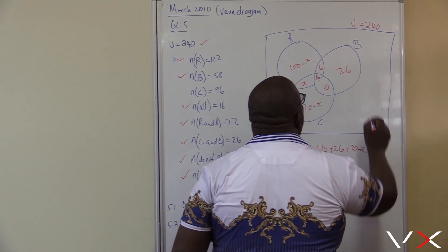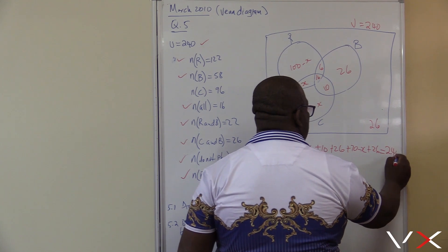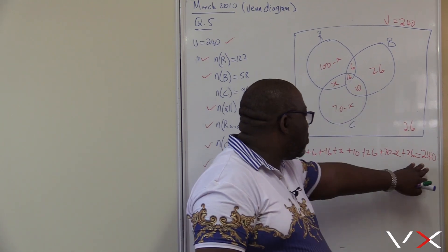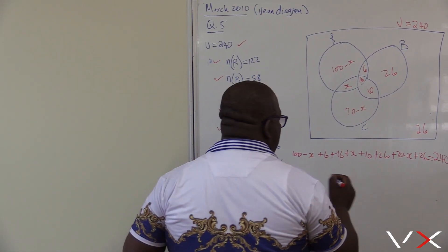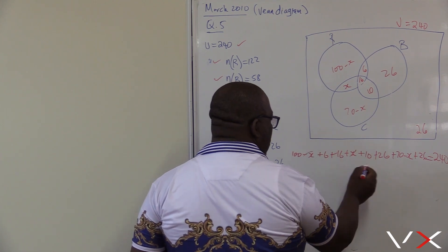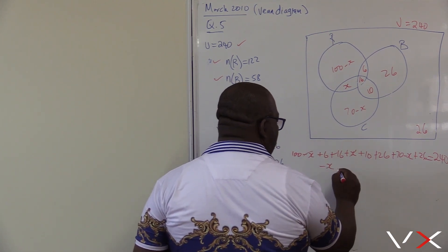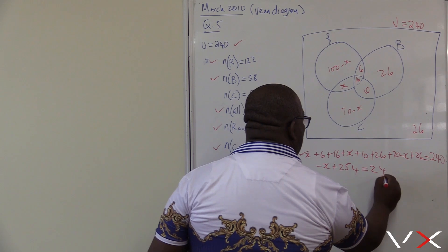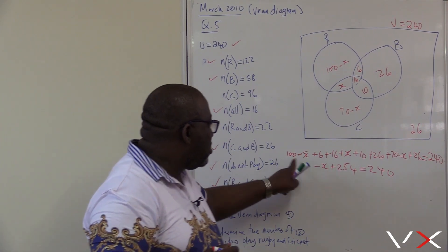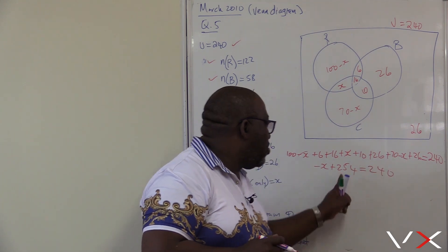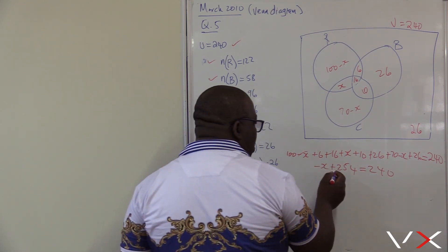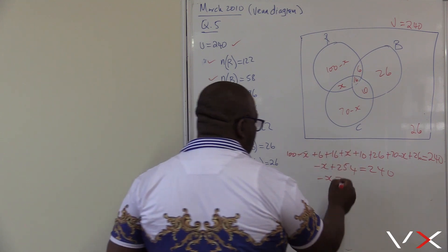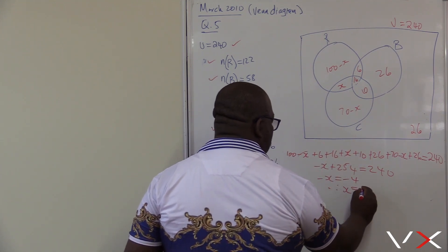We're anticipating that the total must be 240. If we add all these events, they should give us 240. So: 240 equals the sum of all regions. Adding all the numbers gives us 254 minus X equals 240. Therefore, minus X equals 240 minus 254, which gives minus X equals minus 14, so X equals 14.